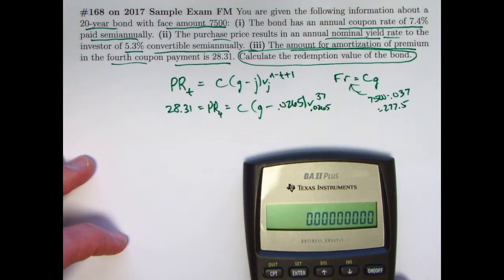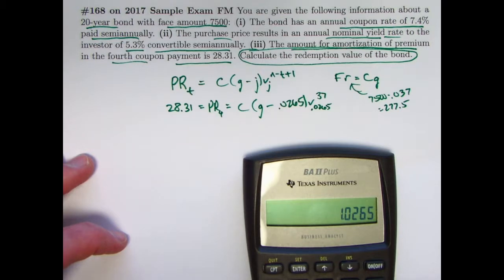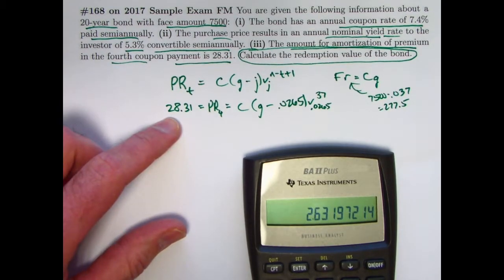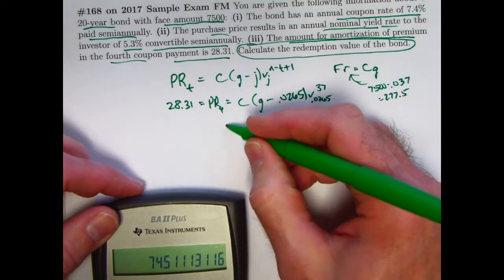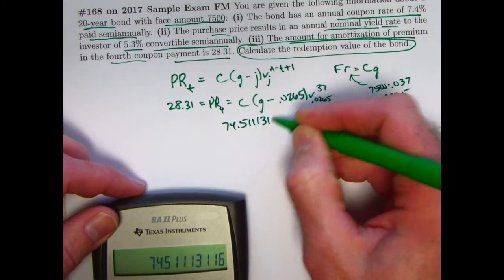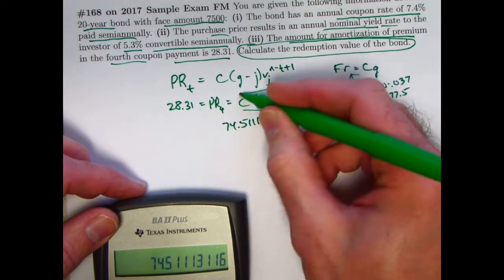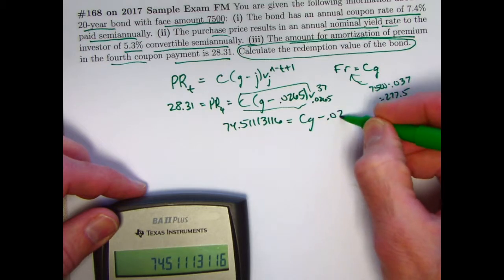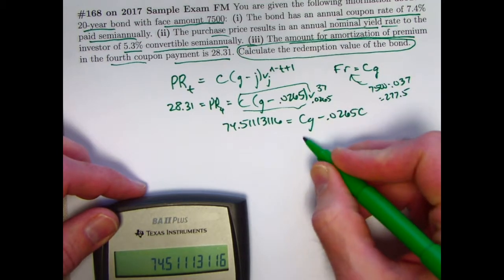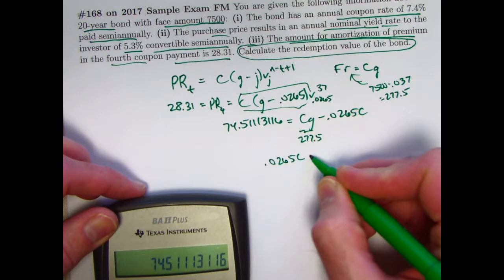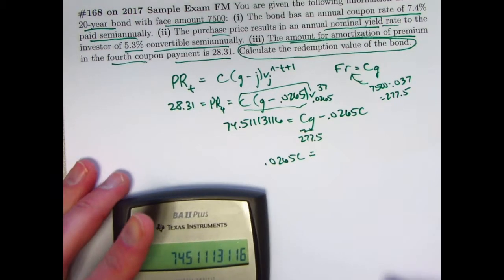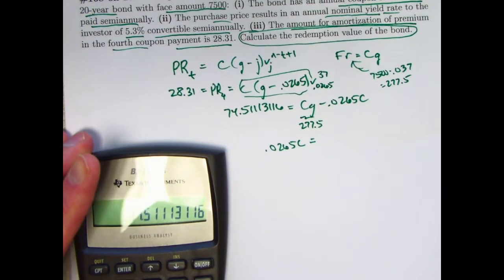Let's go ahead and figure out V to the 37th power. 1.0265 is 1 plus J. Reciprocal is V to the 37th power is this. Divide both sides by that. So I'll take its reciprocal and multiply times 28.31. And the new equation I get is that 74.51113116 equals this thing here. Multiply the C through. Replace the CG with 277.5. Add 0.0265 C to both sides. Subtract 74.5111 from both sides. So let's take this thing and negate it.